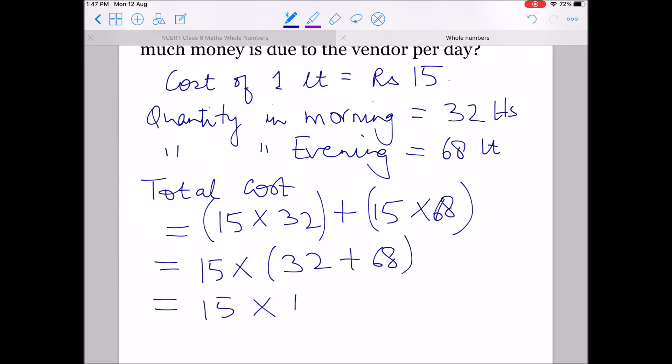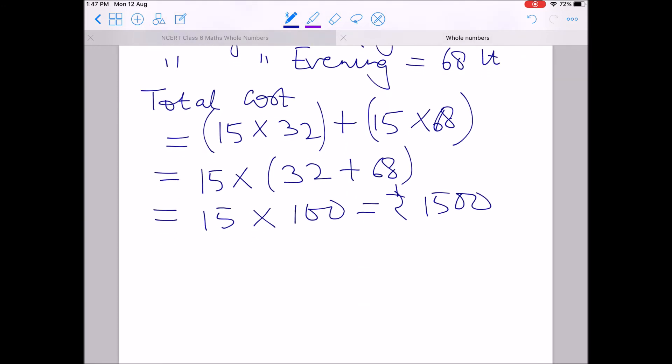So it will be 15 into 100, directly 1500 answer. So the total money spent, total money due to the vendor will be 1500.